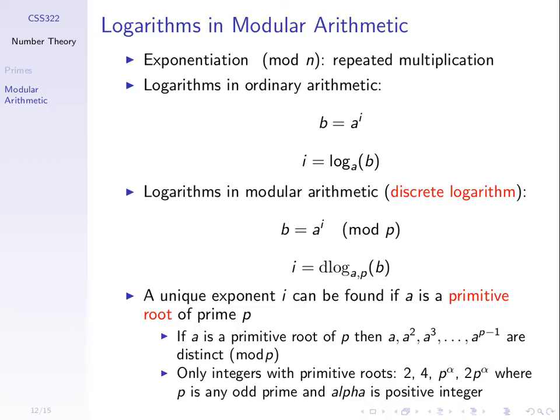Not all integers have primitive roots. The only integers with primitive roots are: 2, 4, and any prime raised to some integer — p to the power of 1, p to the power of 2 — and 2 times that value. So only some numbers have primitive roots, and that restricts us when we want to find a discrete logarithm. When we want to use the discrete logarithm in a cryptographic algorithm, we must choose our numbers carefully.